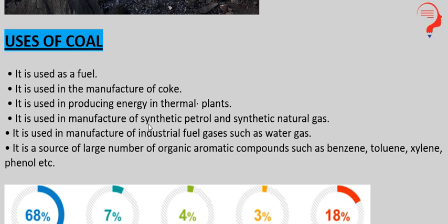It is used in manufacture of synthetic petrol and synthetic natural gas. It is used in manufacture of industrial fuel gases such as water gas. It is a source of a large number of organic aromatic compounds such as benzene, toluene, xylene, phenol, etc. — coal ke zariye aur bhi bahut saari organic compounds banayi jaati hain.